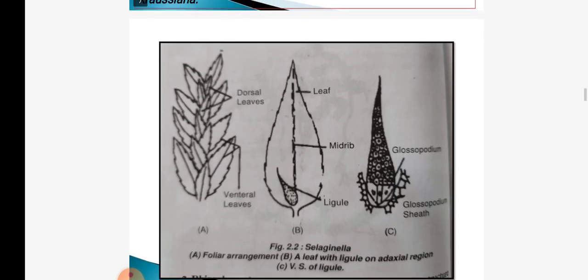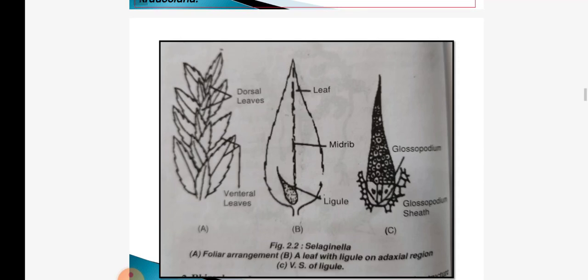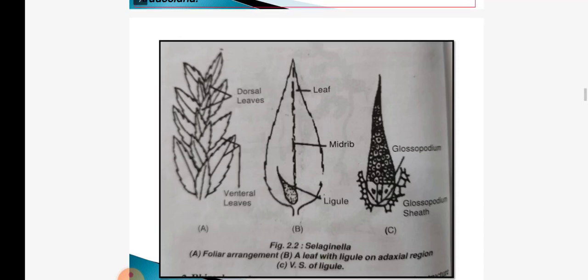This figure represents foliar arrangement. A leaf with ligule on the adaxial surface, and the ligule is present at the base of the leaf. Near the ligule there is a presence of glossopodium, along with glossopodium sheath.